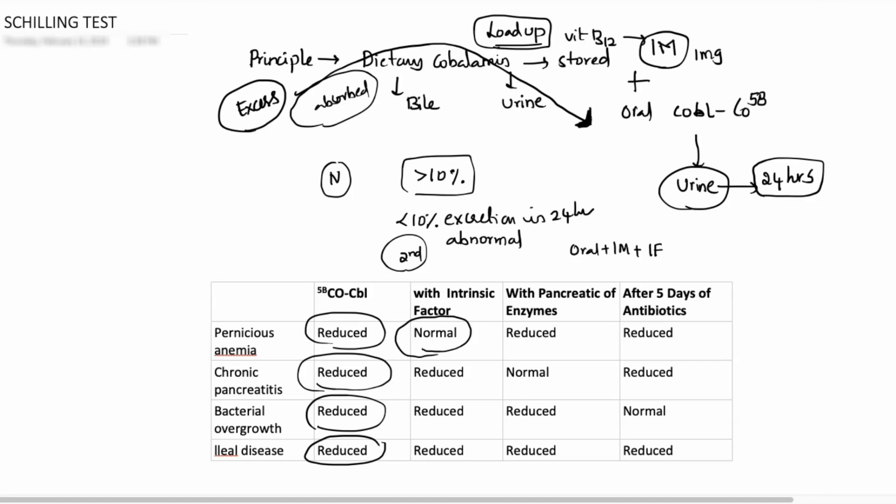In case of chronic pancreatitis, as we are discussing, pancreatic enzymes are important for release of the dietary cobalamin from R binding protein. So if there is pancreatic deficiency, you will see reduced first test. So if you give pancreatic enzyme, the patient responds and he will become normal.